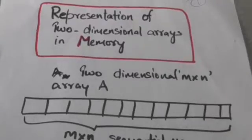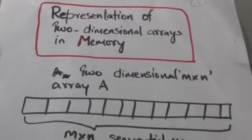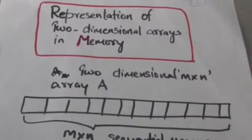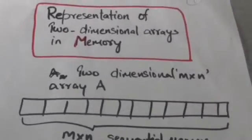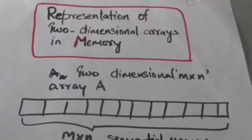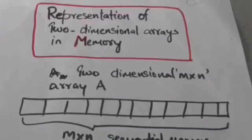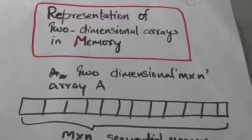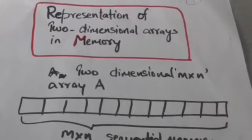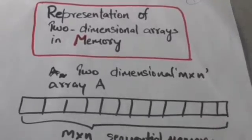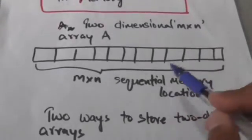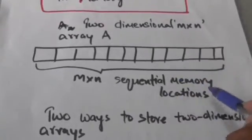Hello friends, welcome back. In this tutorial we will study how two-dimensional arrays are represented in memory. We know that two-dimensional arrays are matrices. A two-dimensional m×n array is a matrix of m rows and n columns, but in memory this two-dimensional array will be represented by a block of m×n sequential memory locations.